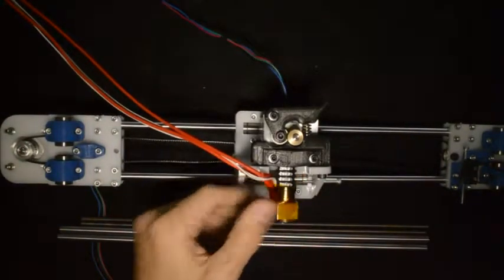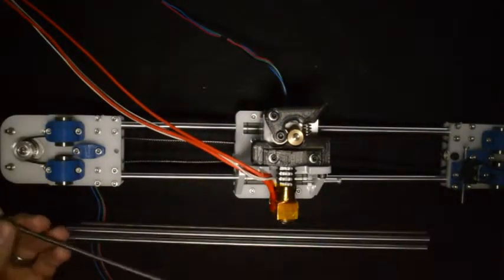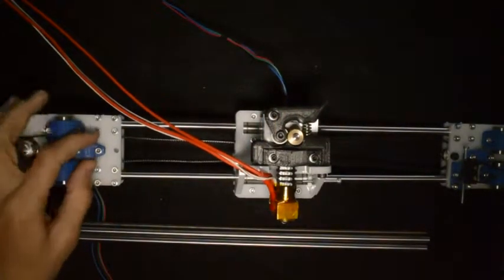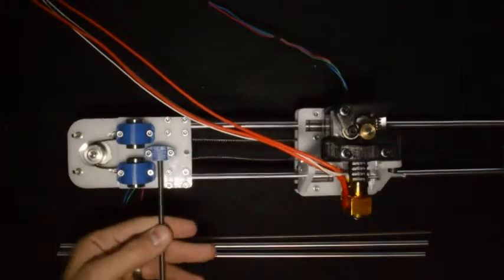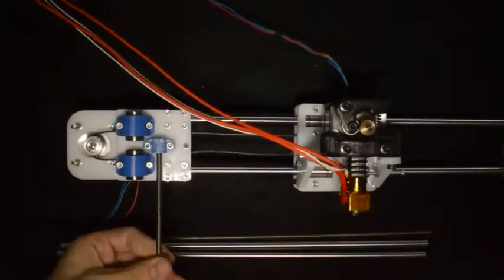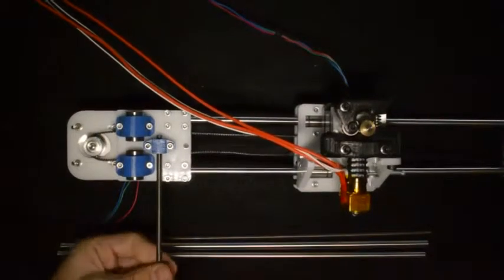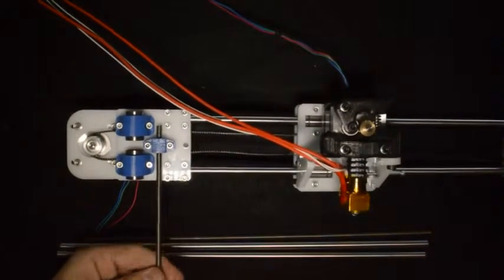When you are done with that and the extruder is nicely secured, you can insert the threaded rods into the brackets provided. You can just screw them in until about halfway through.